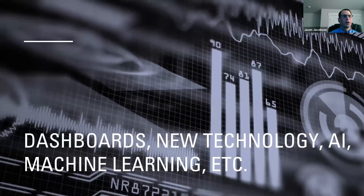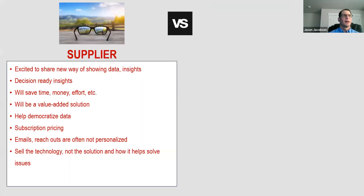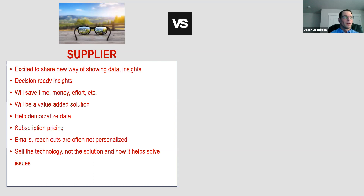The next one is dashboards — I call this dashboards, new technology, AI, machine learning. On the supplier side, there are so many companies right now offering dashboards. When you're a supplier, you're excited — you've got a new way of showing data or decision-ready insights. You come across with: this dashboard is going to save you time and money, it's going to democratize your data. Sitting on the client side now, I get inundated with emails about this — some are personalized, some are completely canned. Some are just selling the technology, but not selling the solution.